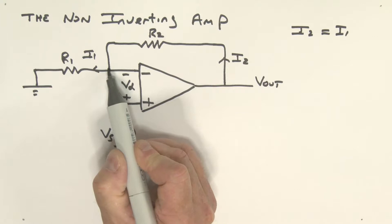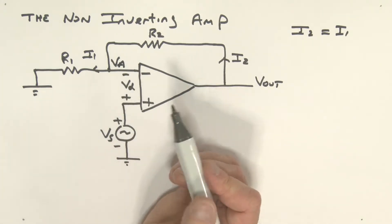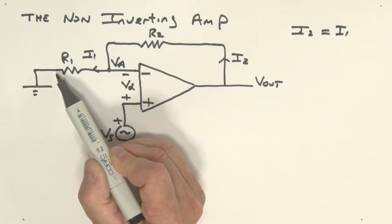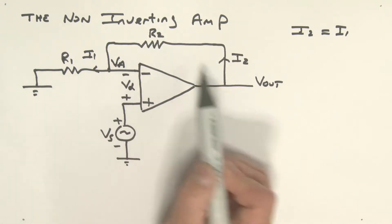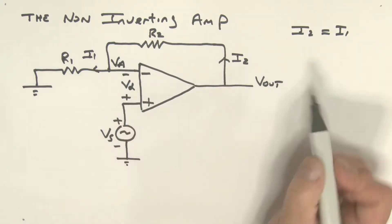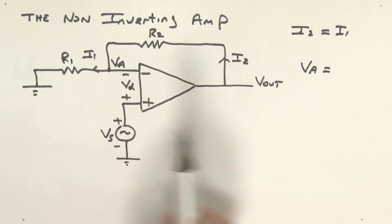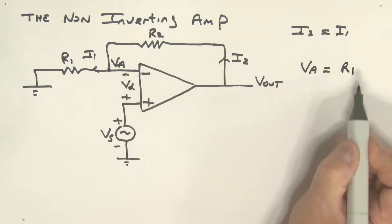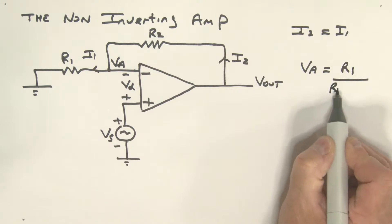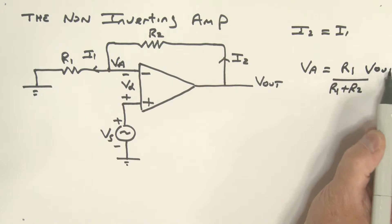Let's talk about the voltage at this point, which we'll call VA. Since the same current is flowing through both resistors, this is effectively a voltage divider. VA is simply equal to the voltage across resistor R1, which is R1 divided by the sum R1 plus R2, multiplied by Vout.